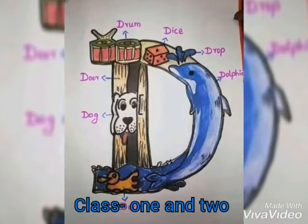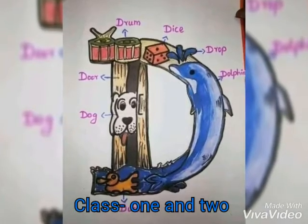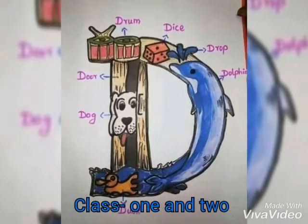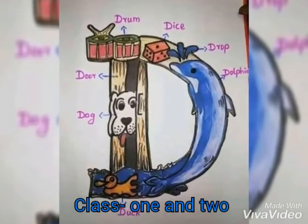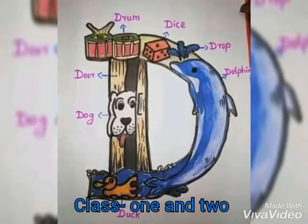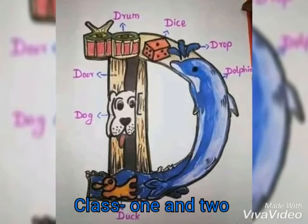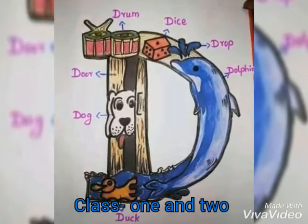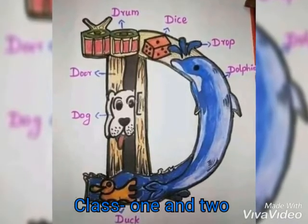D for duck, duck means kukur. D for door, door means darja.